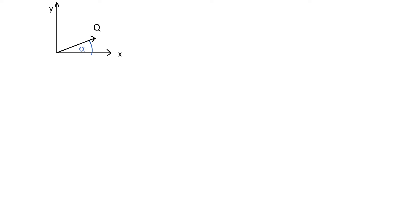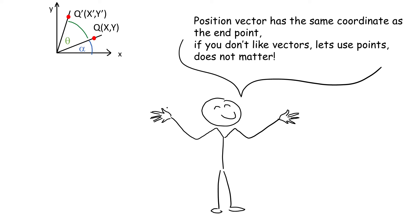Let's start with rotation matrix. We have some position vector q, position because it starts at 0,0. It is placed at angle alpha to the x-axis. Now let's imagine that we rotate this vector by angle theta and we get q'. The position vector has the same coordinate as the end point, and if you're not a fan of vectors, you might forget that it's a vector and imagine that we are only rotating a point. It will be written down in exactly the same way. So point q has this coordinate and q' has these coordinates.